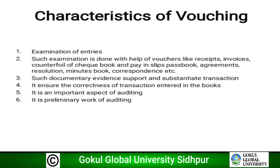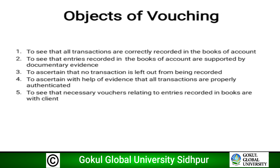There are five objects of vouching. First, to see that all transactions are correctly recorded in the books of account. Second, to see that entries recorded in the books of account are supported by documentary evidence. Third, to ascertain that no transaction is left out from being recorded. Fourth, to ascertain with the help of evidence that all transactions are properly authenticated. Fifth, to see that necessary vouchers relating to entries recorded in the books are with the client.